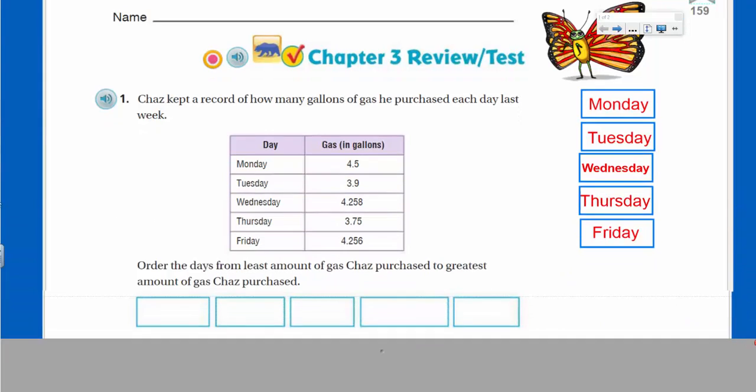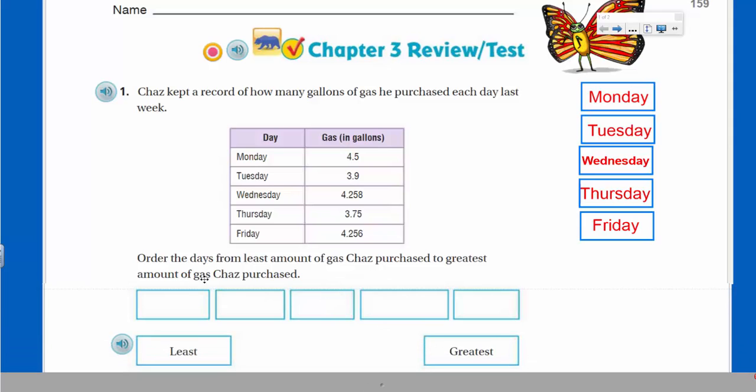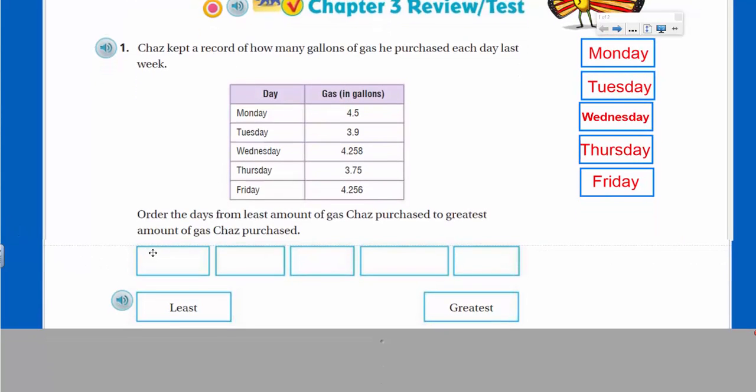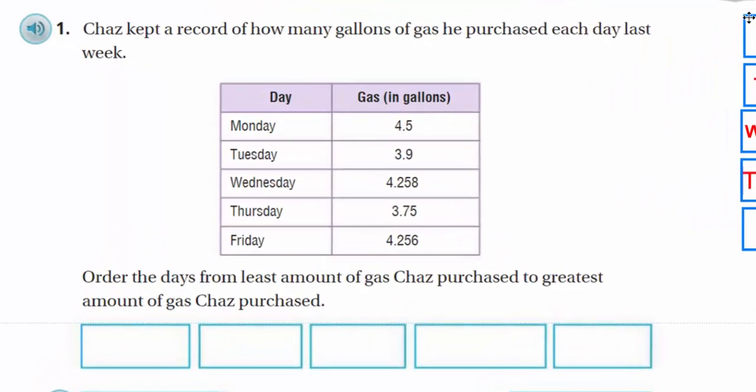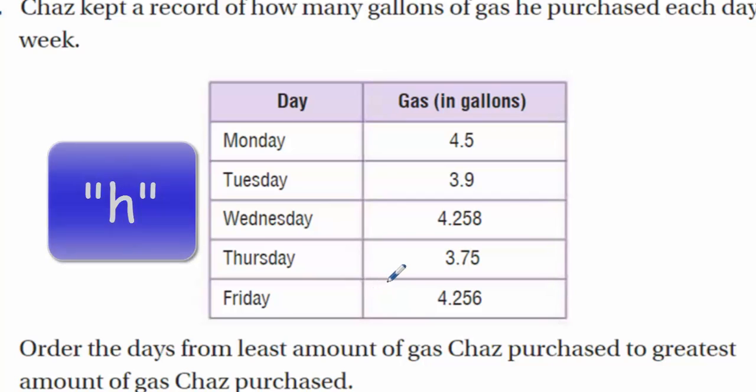Okay, what is this asking me to do here? It does say that Chaz kept a record of how many gallons of gas he purchased each day last week. Okay, and then basically, there's our table. Order the days from least amount of gas Chaz purchased to greatest amount of gas Chaz purchased. All right, from least to greatest.